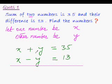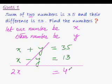Now, as you can see, that on adding these two equations, this plus y and minus y will cancel each other out. So, let's quickly add these equations. x plus x is 2x and this cancels out. And 35 plus 13 would be 48. That means x would be equal to 48 divided by 2. That is 24.